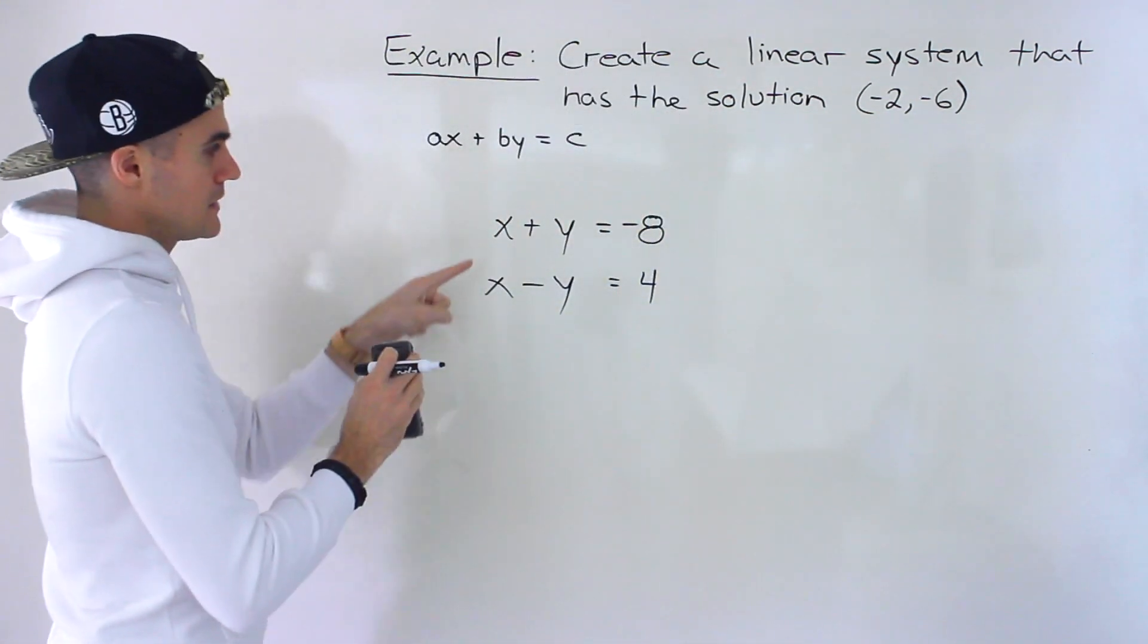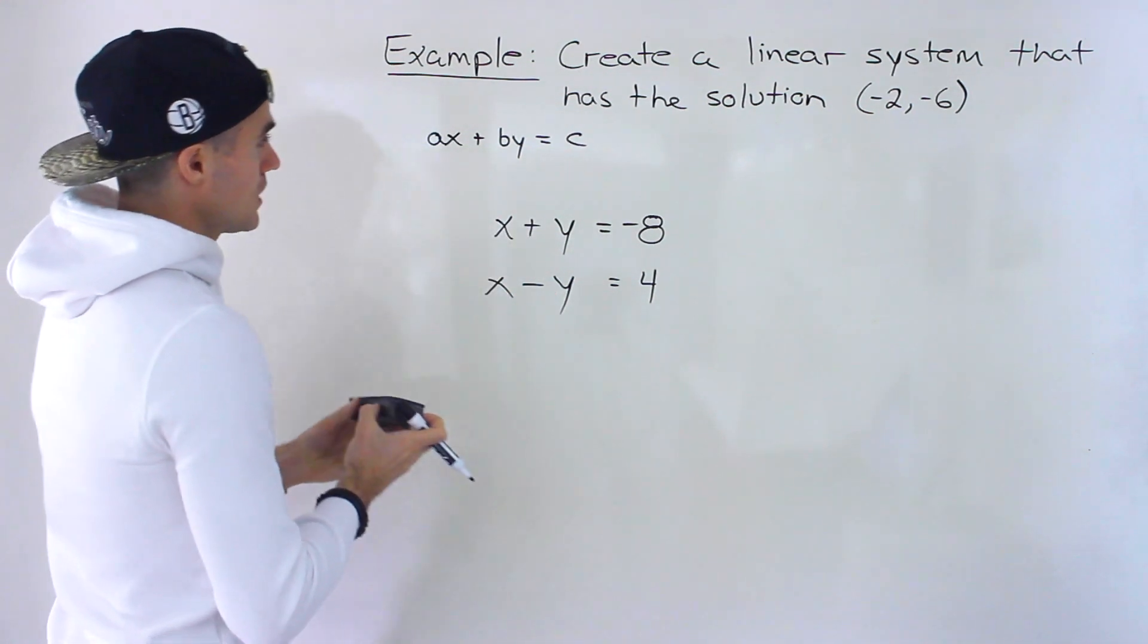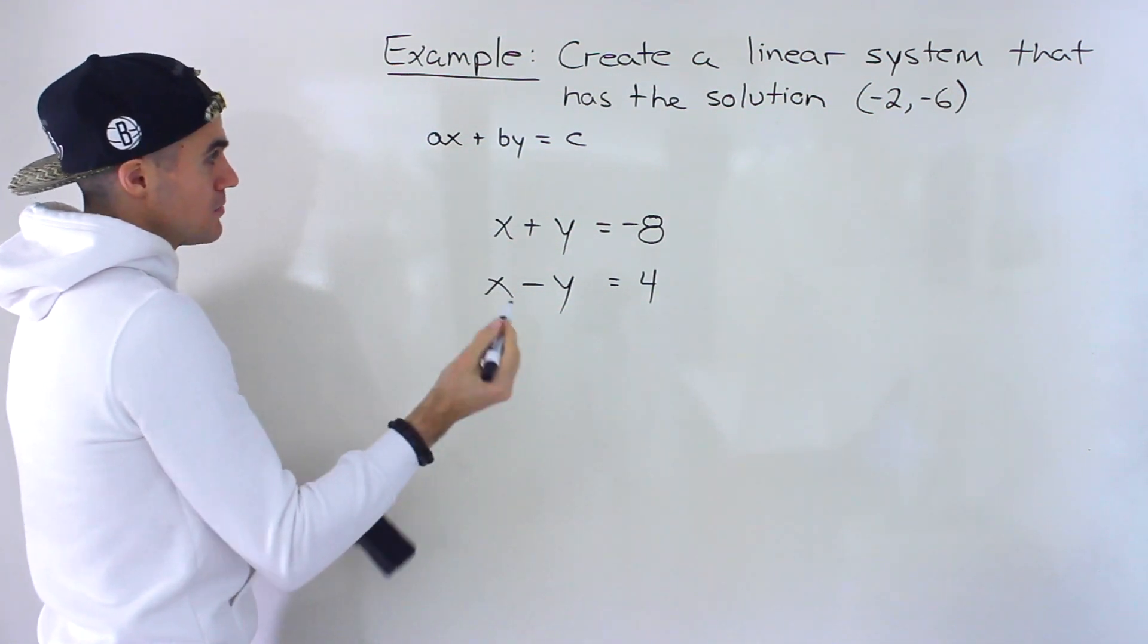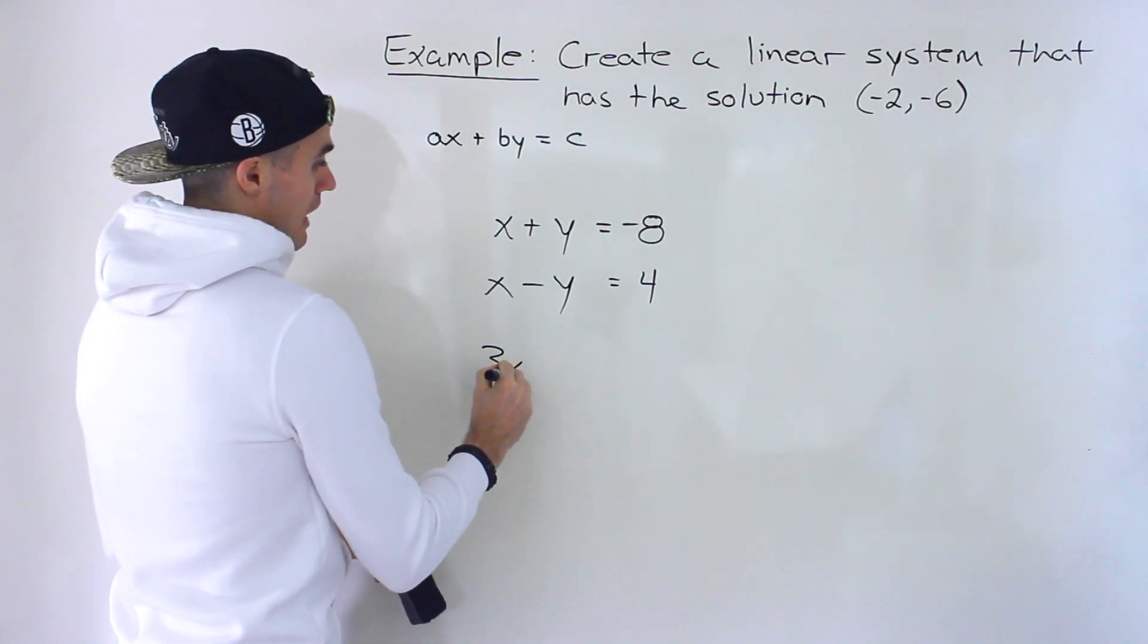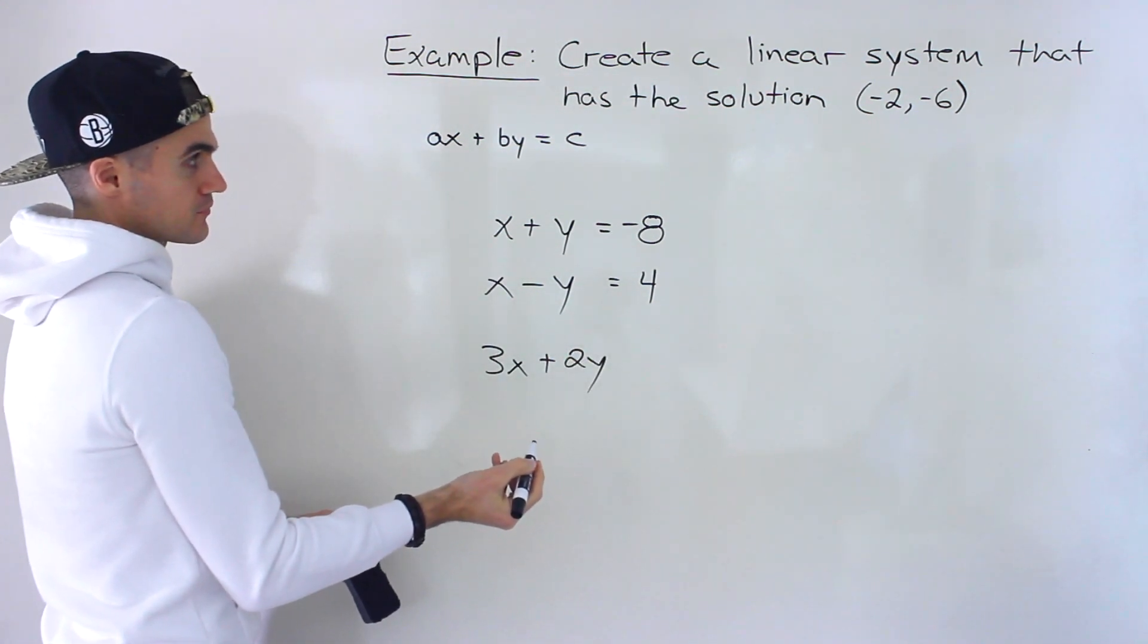These are pretty easy because there's just a 1 in front of these, there's a negative 1 in front here, but you could pick any a and b values. So let's say that we picked 3x plus 2y, for example.